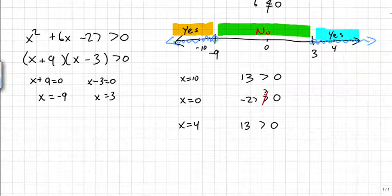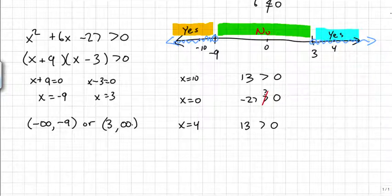If I want to write that as an interval, the interval notation for that would be from negative infinity, remember negative infinity gets the parentheses, because you can't really equal negative infinity, to negative 9, which we don't equal negative 9 either, so it gets parentheses, or from 3 out to infinity. If I want to write that as an inequality, I would write x is less than negative 9, or x is greater than 3.